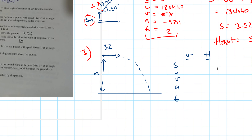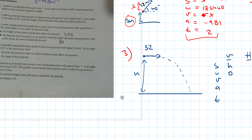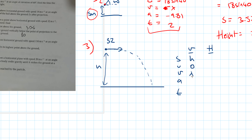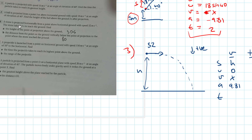Setting up SUVAT for vertical and horizontal components. For the vertical: s is h, u equals zero because the stone is fired horizontally — there is no initial vertical speed. Final speed v is unknown, so we cross it off. Taking downwards as positive, acceleration is 9.81. Time is 2.5 seconds, as given in the question.